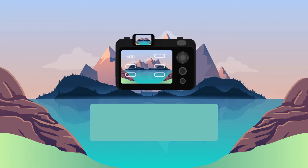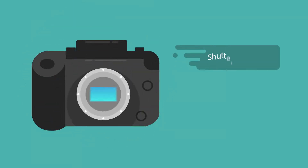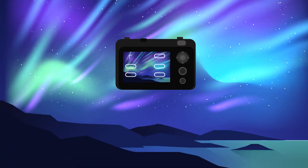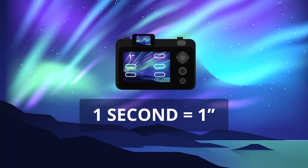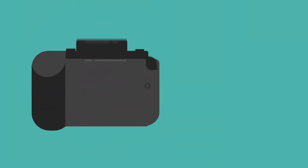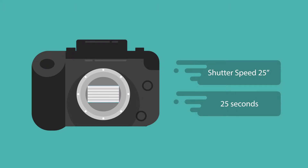Shutter speeds below one second are measured in fractions. That is, if you set your shutter speed to 25, the camera shutter will be open for 1/25th of a second. Once the shutter speed reaches one second, the measurement value changes from fractions to whole numbers. For most cameras, these values are indicated by a quotation sign. So, if you set your shutter speed to 25", that means your shutter will stay open for exactly 25 seconds.